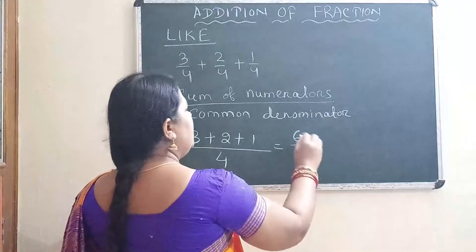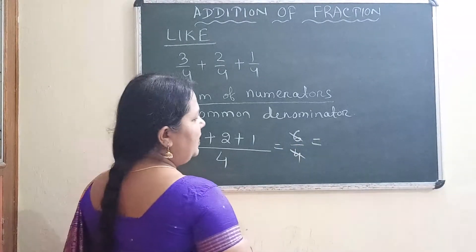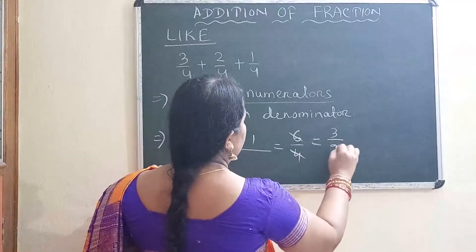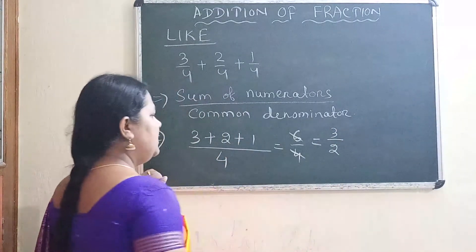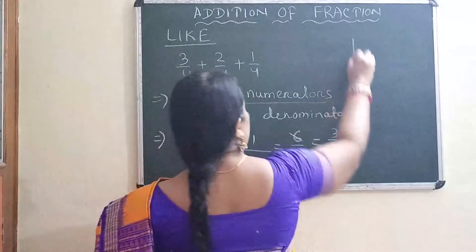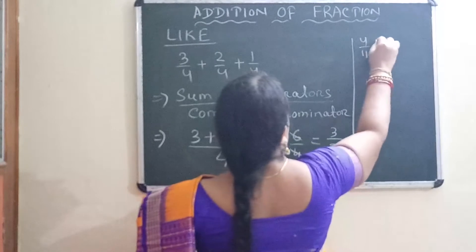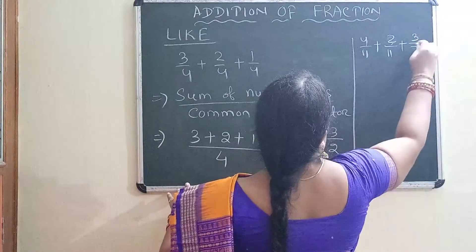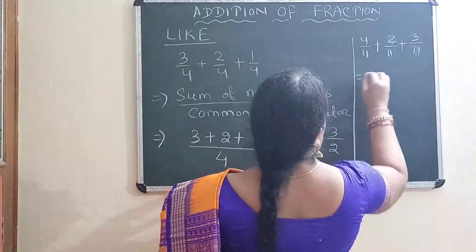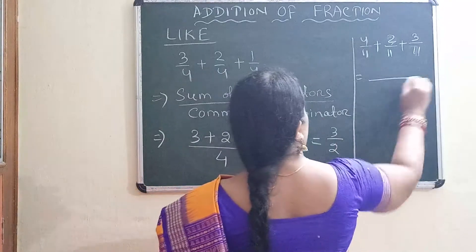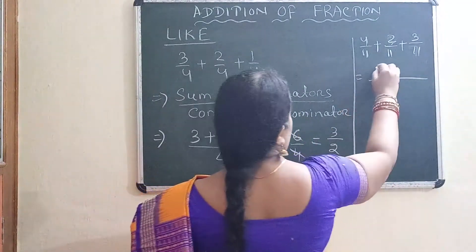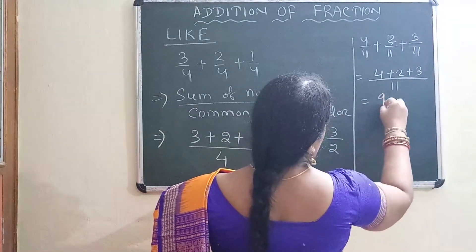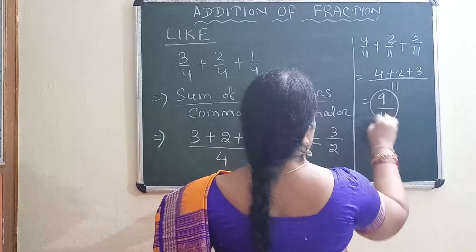You can keep it as 6 by 4, or simplify by dividing by 2 to get 3 by 2. Another example: 4 by 11 plus 2 by 11 plus 3 by 11. The common denominator is 11, and the sum of numerators is 4 plus 2 plus 3, which gives 9 by 11.